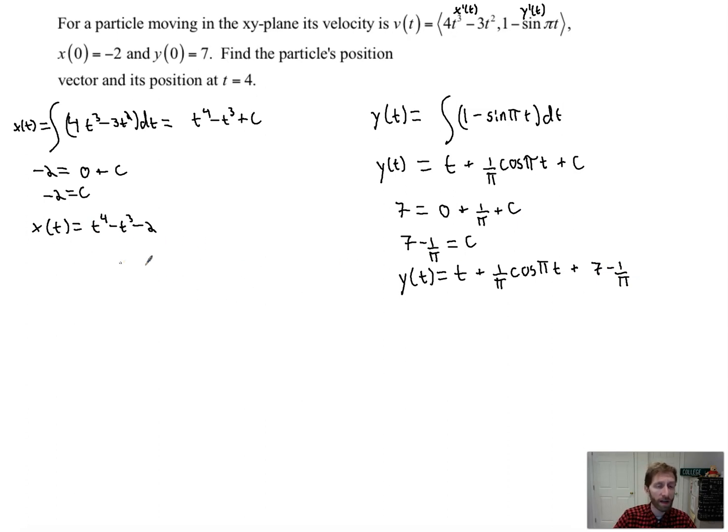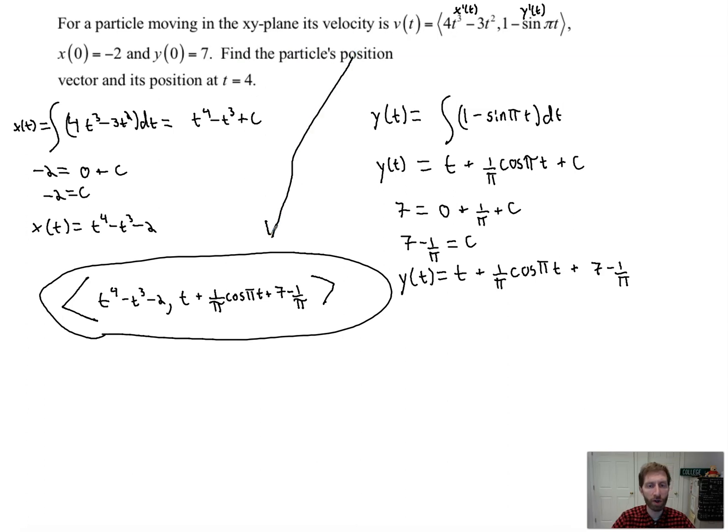So there's x of t and y of t. So your position vector is quite literally this. Like if you put it all together, your position vector would look like this: t to the 4th minus t cubed minus 2, comma, t plus 1 over pi cosine of pi t plus 7 minus 1 over pi. Who made that constant, 7 minus 1 over pi? So that's your position vector.